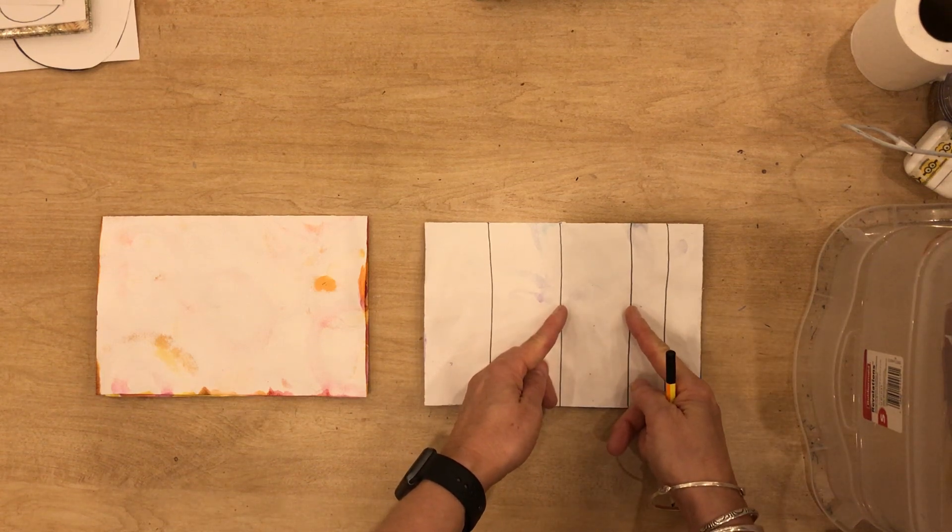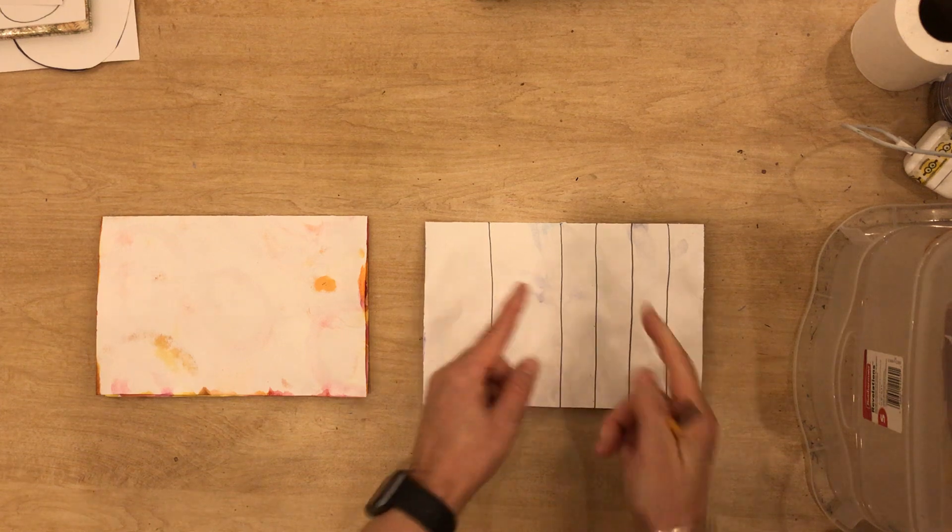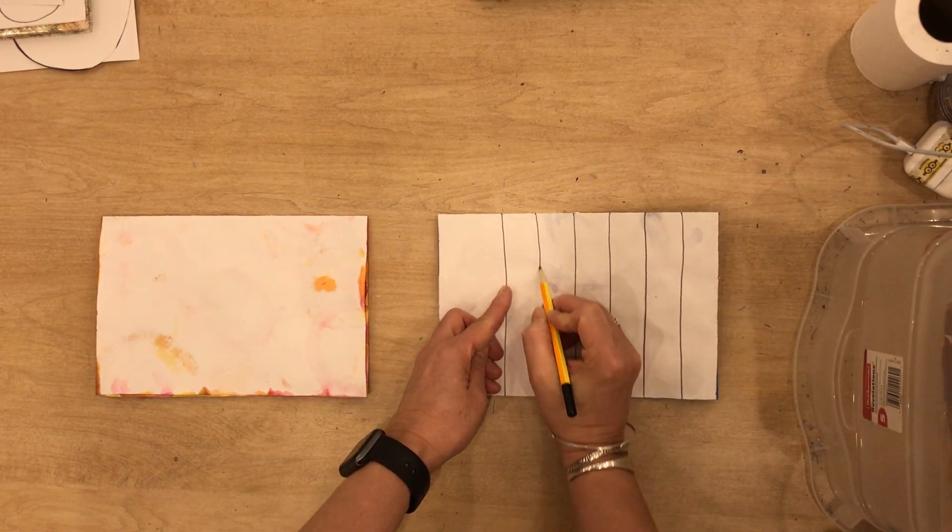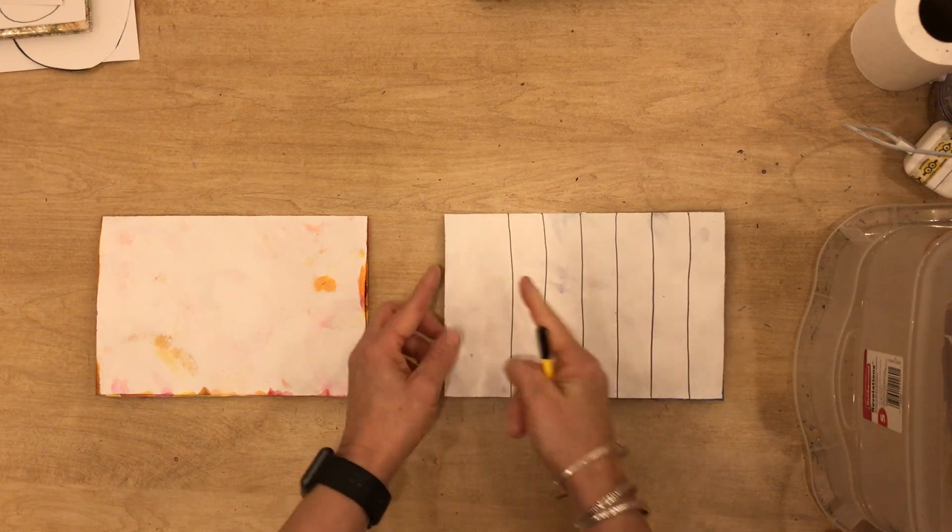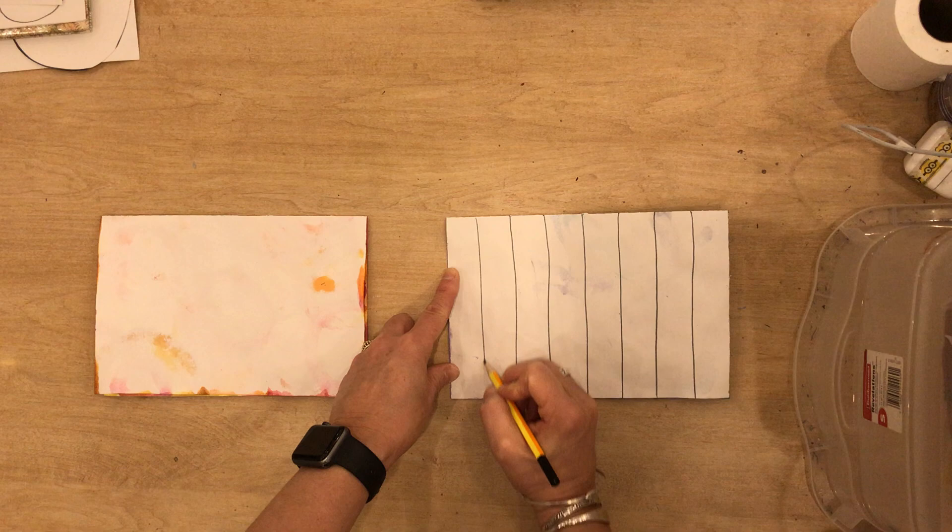Find the middle between these two lines and draw a line down the middle. Find the middle between these two lines and draw a line down the middle and find the middle between these two lines and draw down.